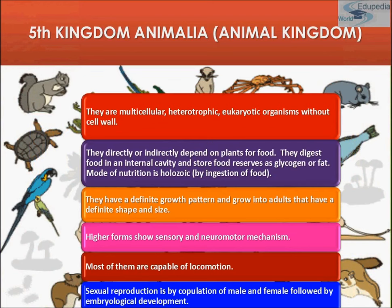We have already read Kingdom Animalia before in detail, but here I'll brief you. They are multicellular, that means they are made up of many cells. They are heterotrophic in nature, that means they obtain their food from plants — they are totally dependent on plants for food. They are eukaryotic organisms without a cell wall, because cell wall is a distinguishing feature of plants, not animal cells.